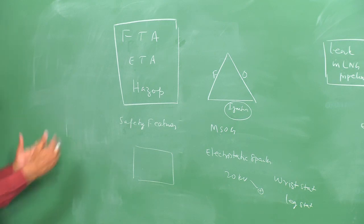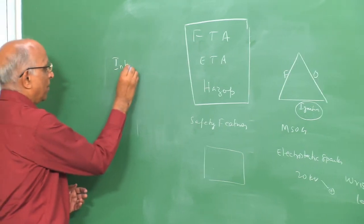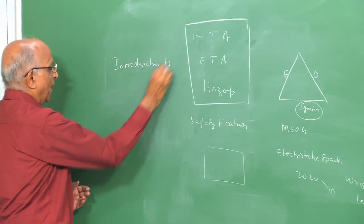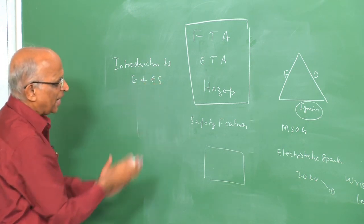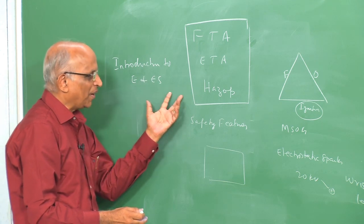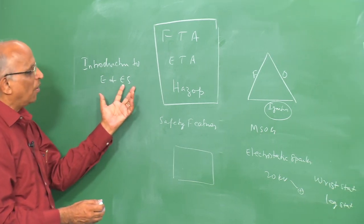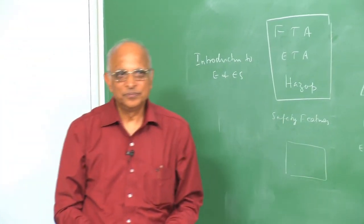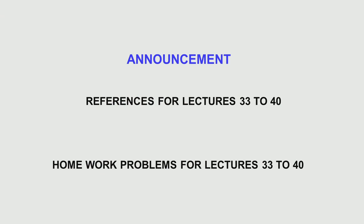This is all about the course on introduction to explosion and explosion safety. We covered the different aspects including safety aspects, consequences, reasons for causing an explosion, and how to go about preventing an explosion. Thank you. The last set of lectures between lecture numbers 33 to 40 covered condensed explosives, TNT equivalence of explosives and their yield, atmospheric dispersion, quantification of damages, and risk analysis. Further references on these topics and a few homework problems are given in the downloads of this video course.